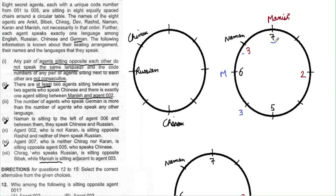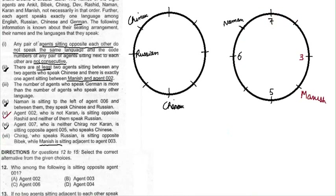Only two cases remain. Applying condition 5 — agent 002 sits opposite Rashid and neither speaks Russian — eliminates one case because position 6 is assigned Russian. Focusing on the remaining case: with 003 and 005 placed, code 004 cannot go next to 003 or 005 (consecutive), leaving only one valid position. Then 008 cannot be next to 007 (consecutive), fixing its position, and code 001 fills the last slot. The coding is now complete.